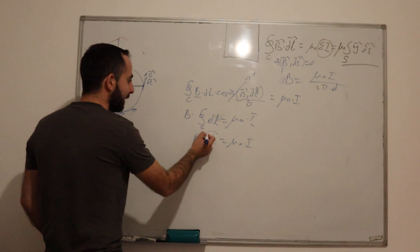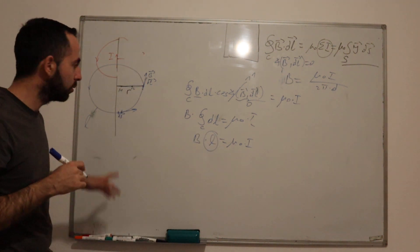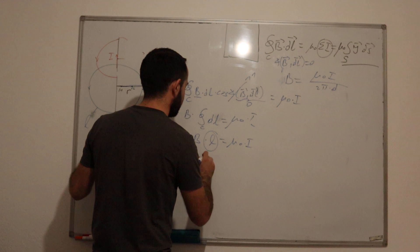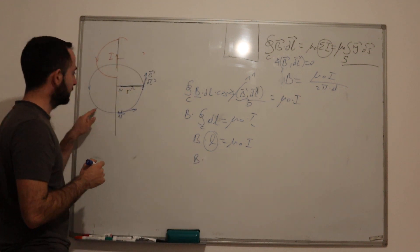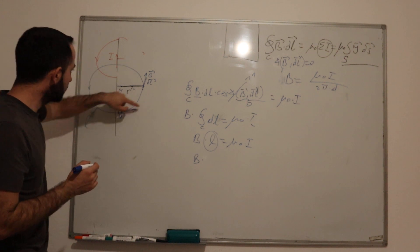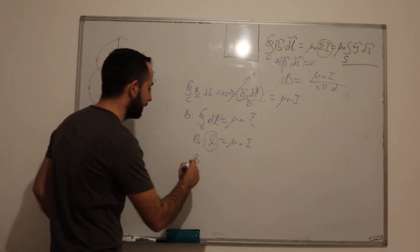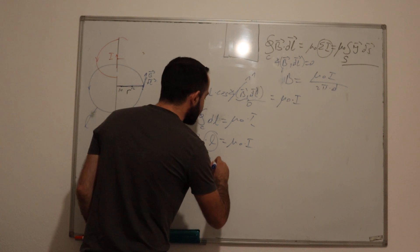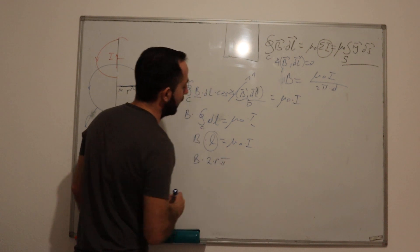But what is the length of my closed contour? What contour did I choose? I chose the circle. So what is the length of a circle? We know that the length of a circle is 2 times radius times π.